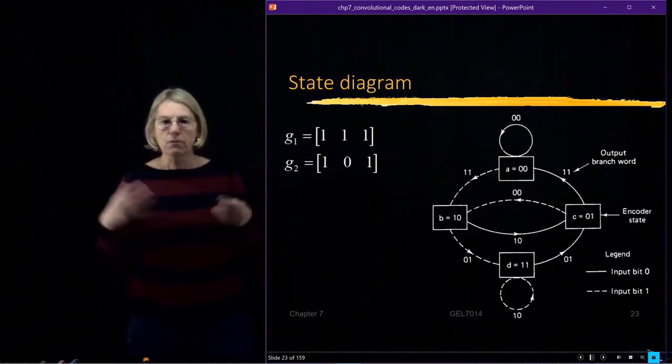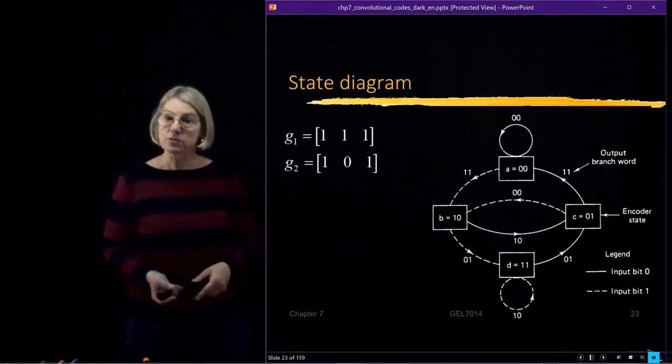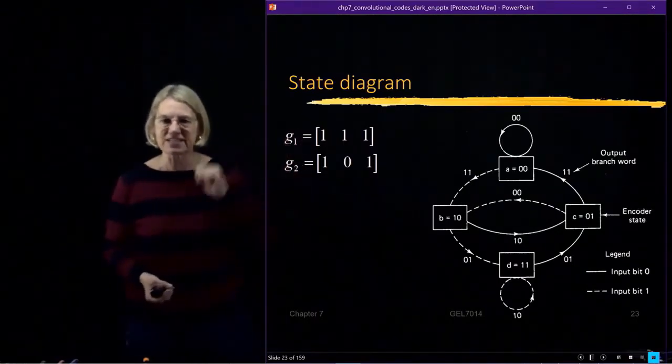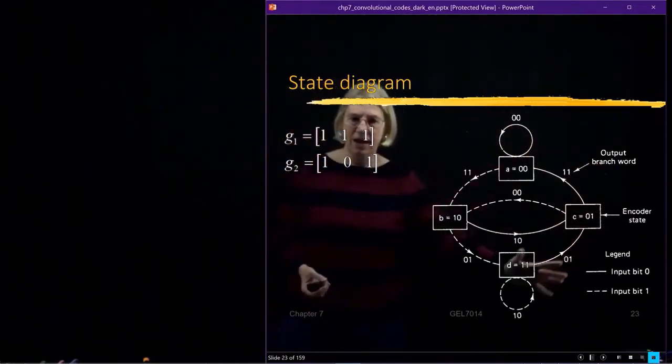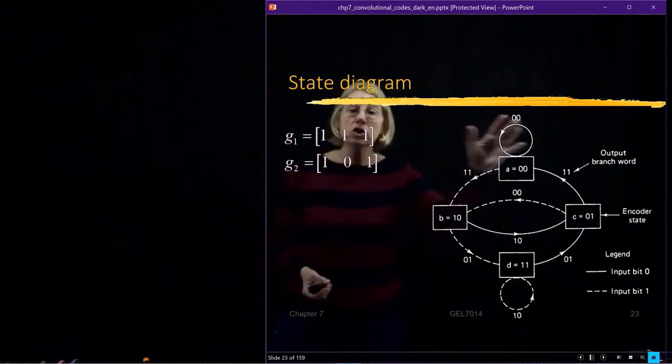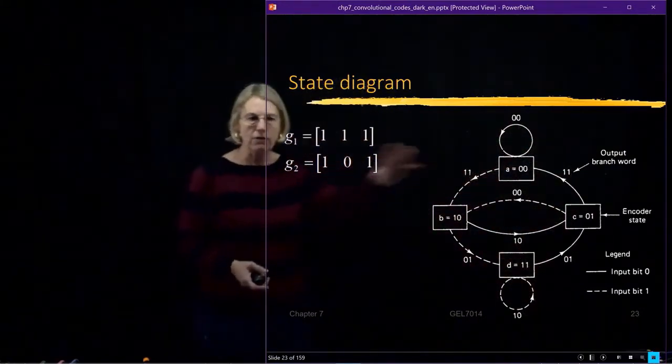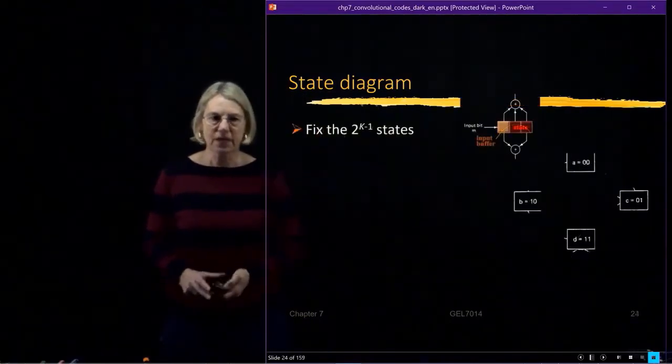So we'll start with what we call a state diagram for a finite state machine. And surprise, surprise, it's related to this vector representation of the encoder. And this is going to be the finite state machine. And I'm going to build it for you so you can understand how we ended up here, how these things related. So we'll start in the first step.